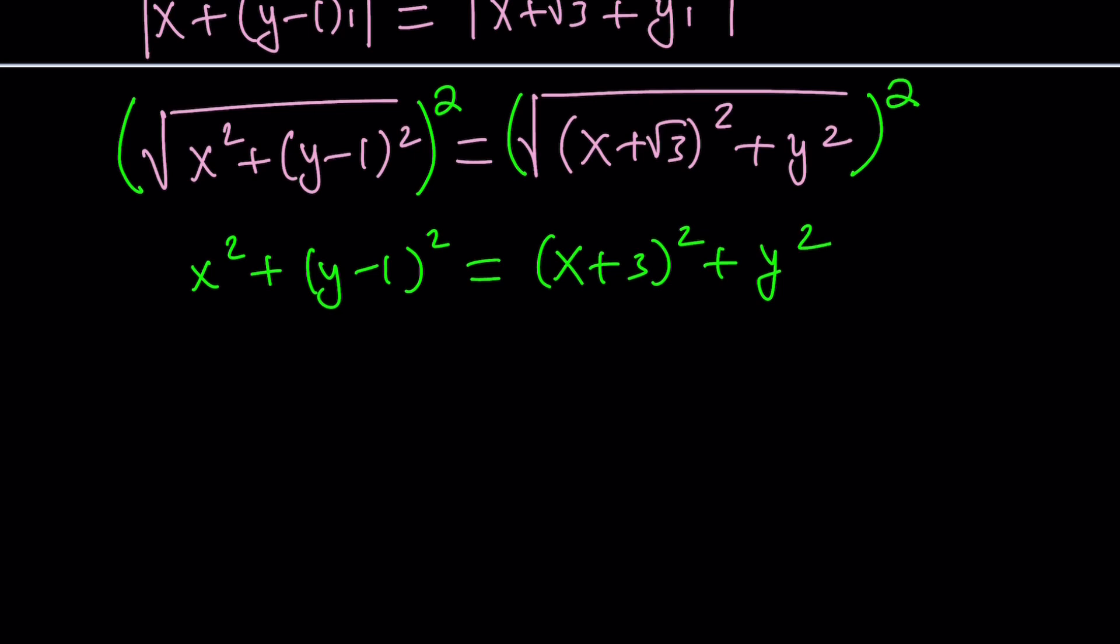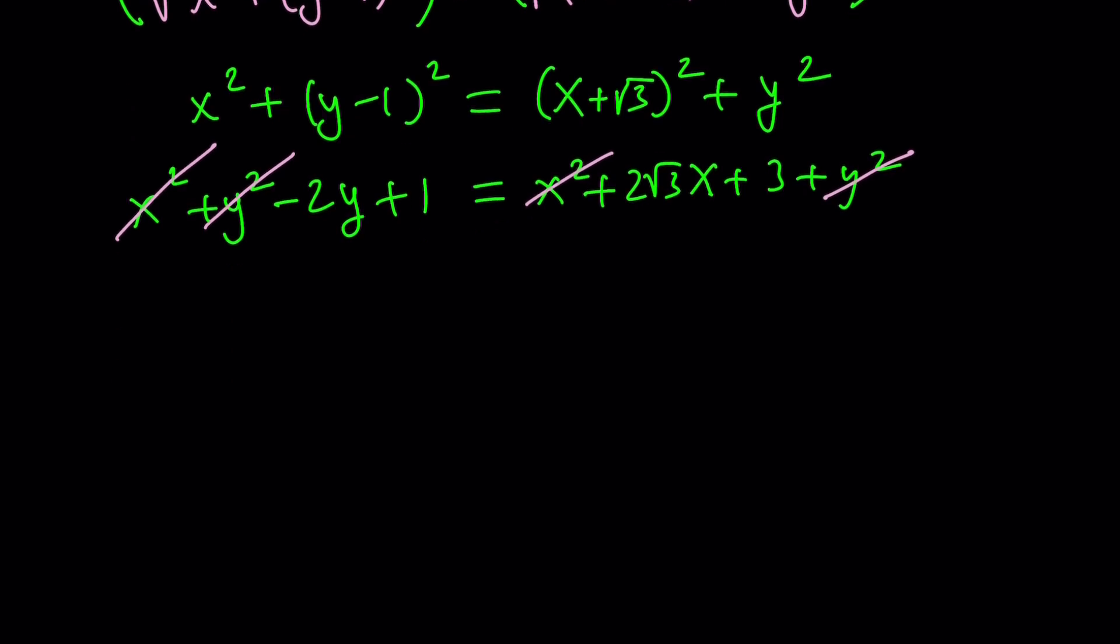I show my work. Now we're going to go ahead and expand it. This is x squared plus y squared minus 2y plus 1. Use the formula for a plus b quantity squared. This is x squared plus 2 root 3x plus 3 plus y squared. Good thing, x squared plus y squared cancels out and we end up with something super simple.